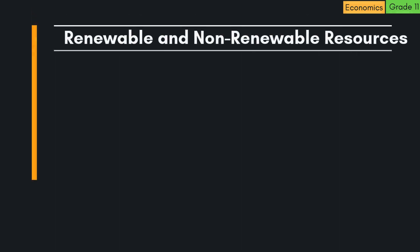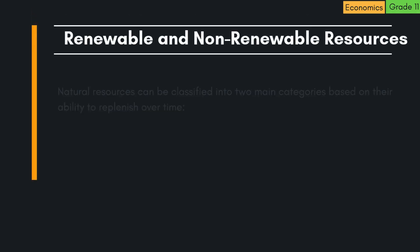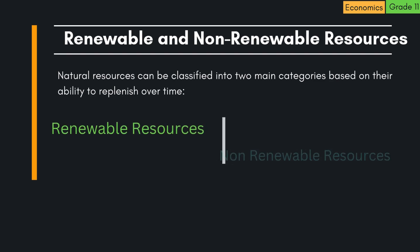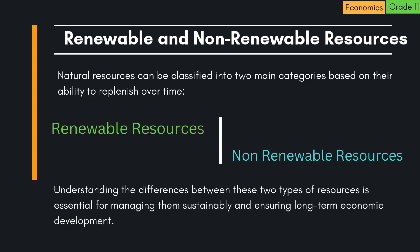Natural resources can be classified into two main categories based on their ability to replenish over time: renewable resources and non-renewable resources. Understanding the differences between these two types is essential for managing them sustainably and ensuring long-term economic development.